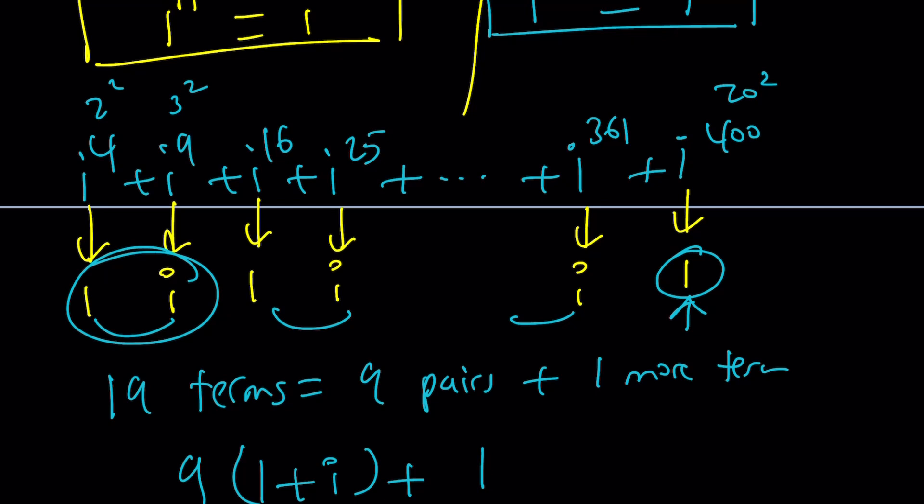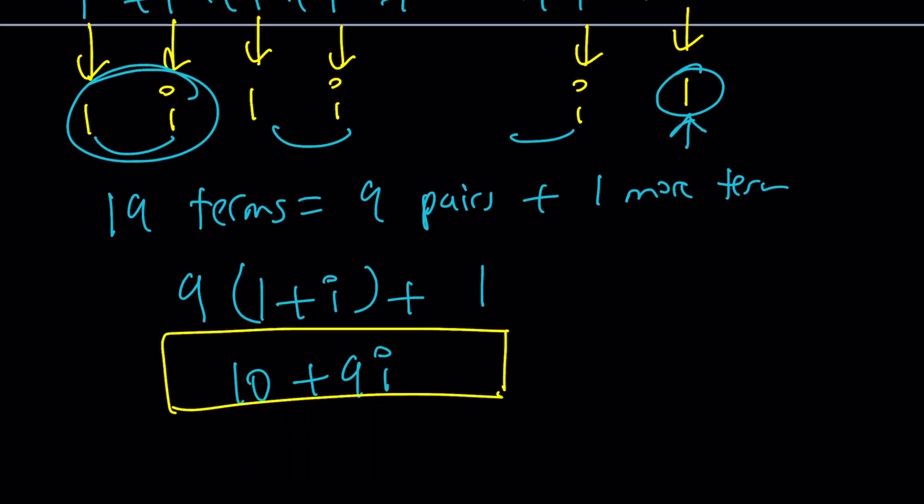we basically added i 2 squared through i 20 squared. And we came up with something like this. See if you can come up with a formula. And now we're going to compare your findings with what we get from Wolfram Alpha.